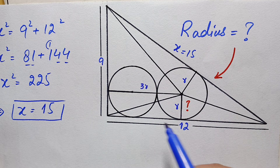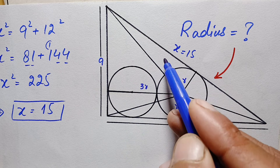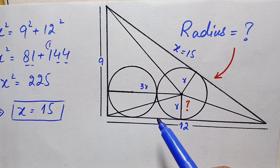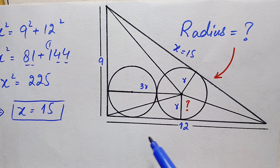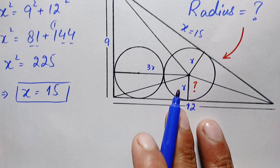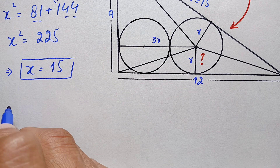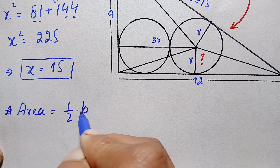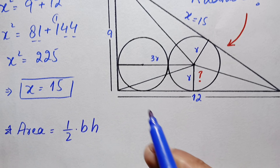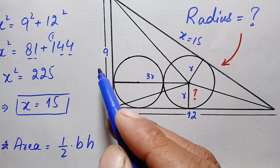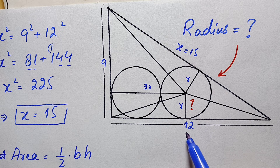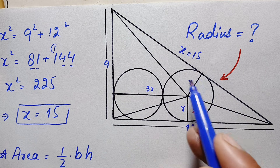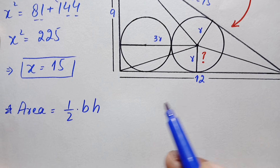Looking at the bigger right angle triangle, we can identify three smaller triangles inside it. The area of the bigger right angle triangle equals the sum of the areas of these three triangles. The first triangle has base 12 units and height r. The second triangle has base 9 units and height 3r. The third triangle has base 15 units and height r.